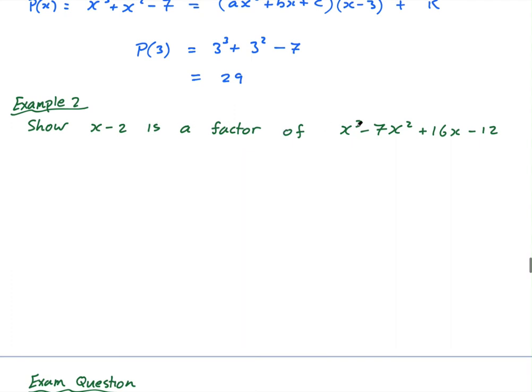Show x minus 2 is a factor of x cubed minus 7x squared plus 16x minus 12. Now again, you could do long division, and hopefully you'd get a nice quadratic. But if I just do f(2), let's go f(2). I could technically say let f(x) equal this thing. So find f(2), if f(2) equals 0, 2 cubed minus 7 times 2 squared plus 16 times 2 minus 12 equals 8 minus 28 plus 32 minus 12 equals, 8 plus 32 is 40, negative 28 minus 12 is 40, this equals 0.